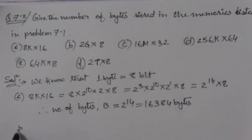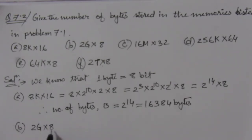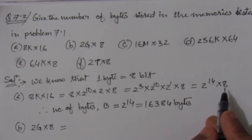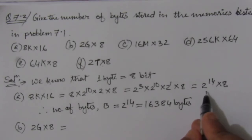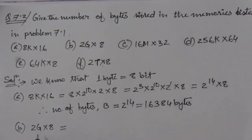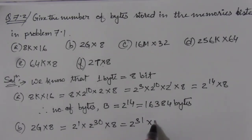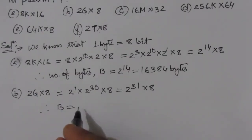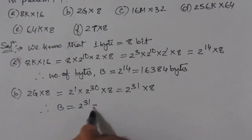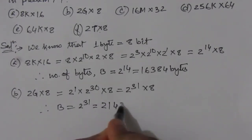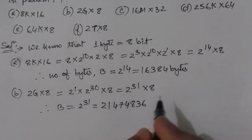In part b, we have 2G × 8. Here we already have 8 bits per word, which is one byte, so we just need 2G = 2^1 × 2^30 = 2^31. Therefore, B = 2^31 = 2,147,483,648 bytes.